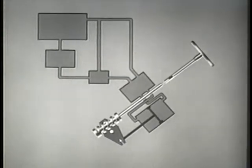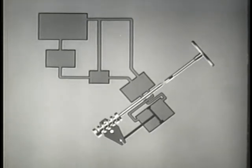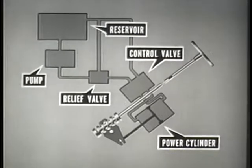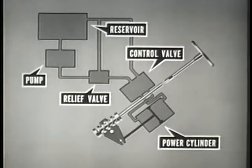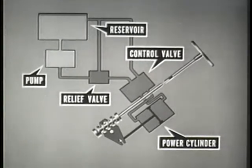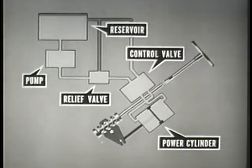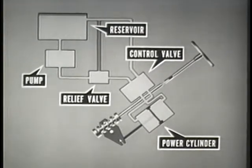To aid in illustrating the internal function of the hydraulic system, a schematic diagram will be used. The steering linkage from the pitman arm lever to the front wheels will not be shown. Let us view the five major components of the hydraulic system as they operate progressively to deliver the steering assist. The reservoir supplies fluid. The pump driven by the engine delivers fluid under pressure to the relief valve and control valve. The control valve, actuated by the steering shaft, directs the fluid to the power cylinder, which converts hydraulic pressure into mechanical force by means of a piston.